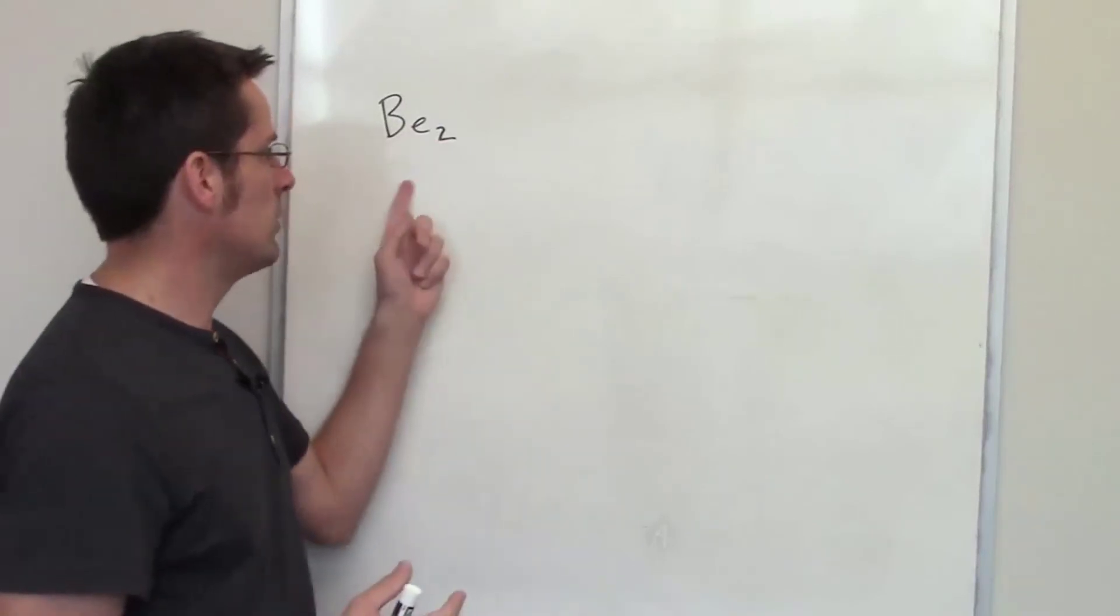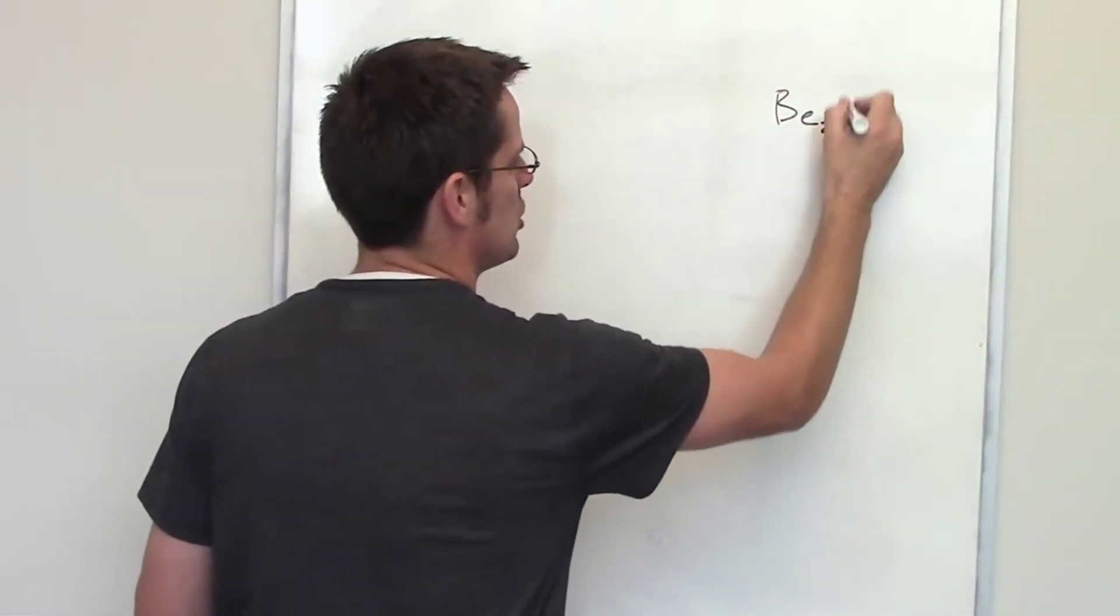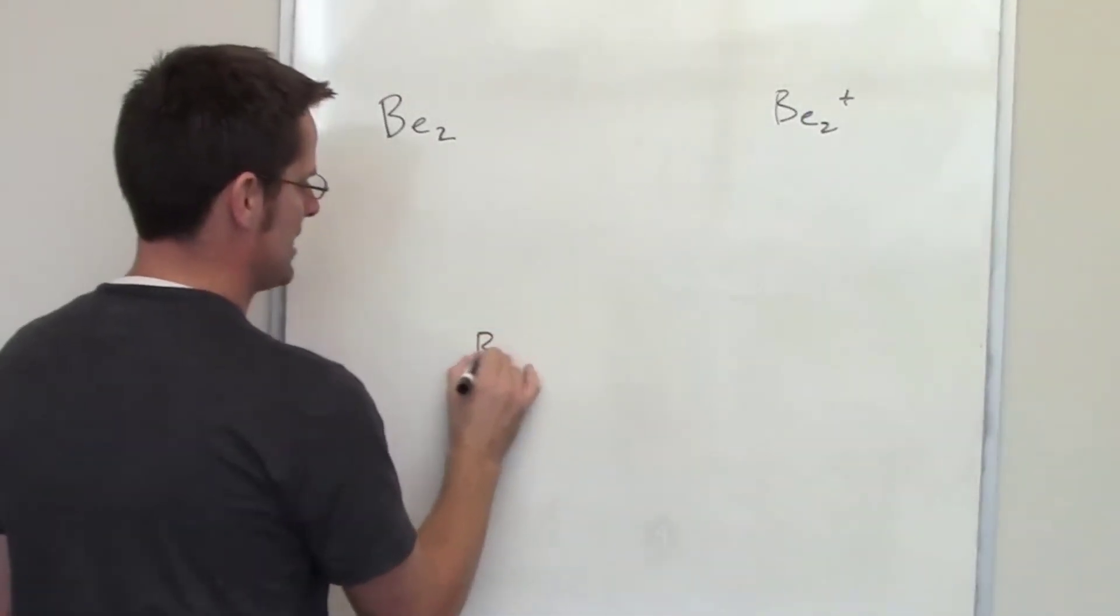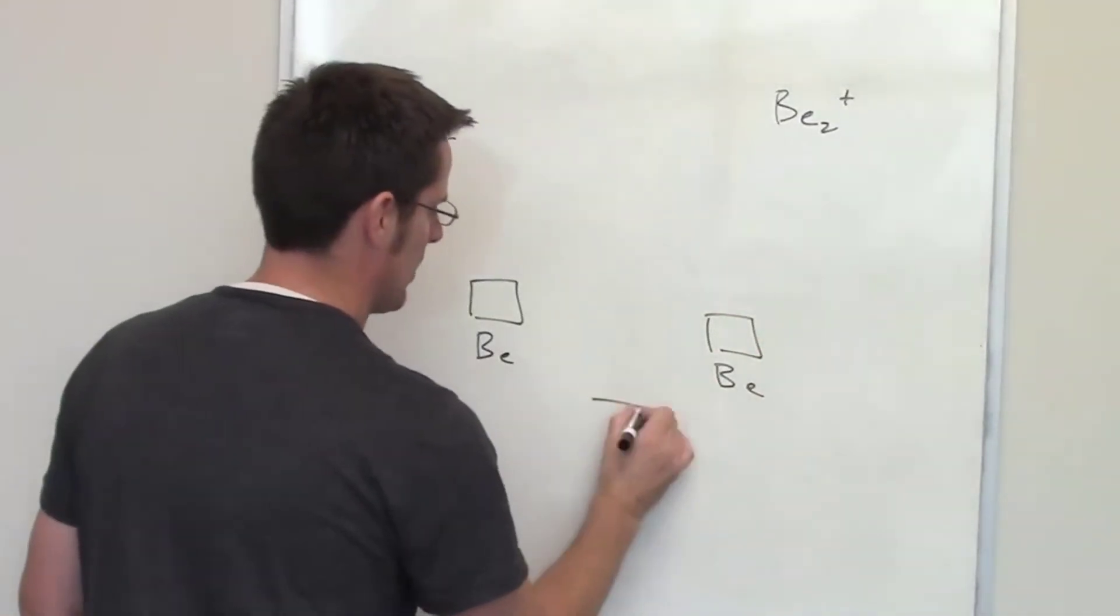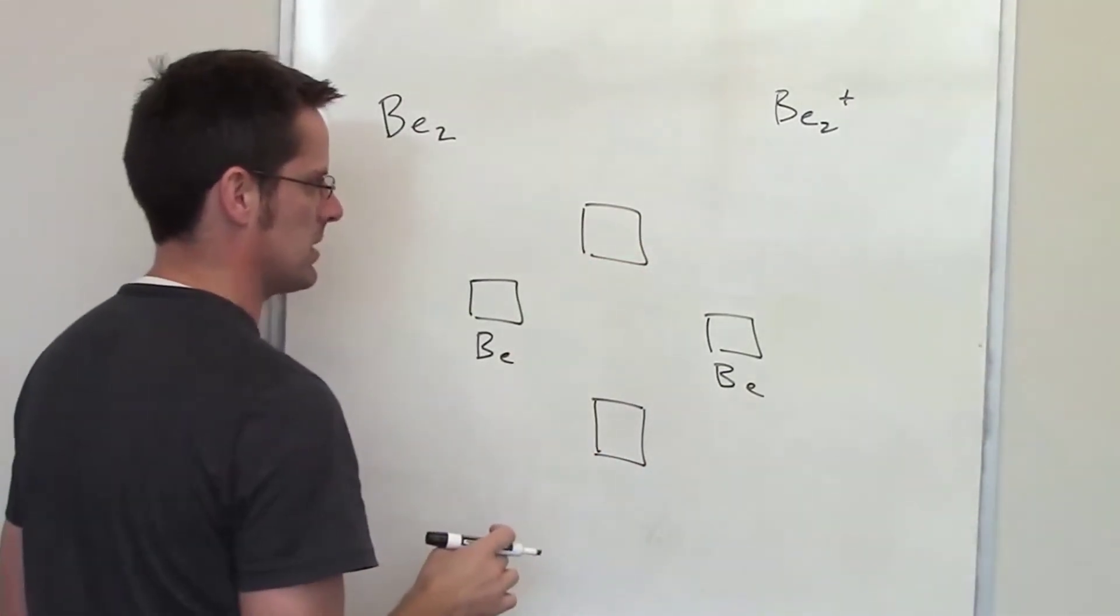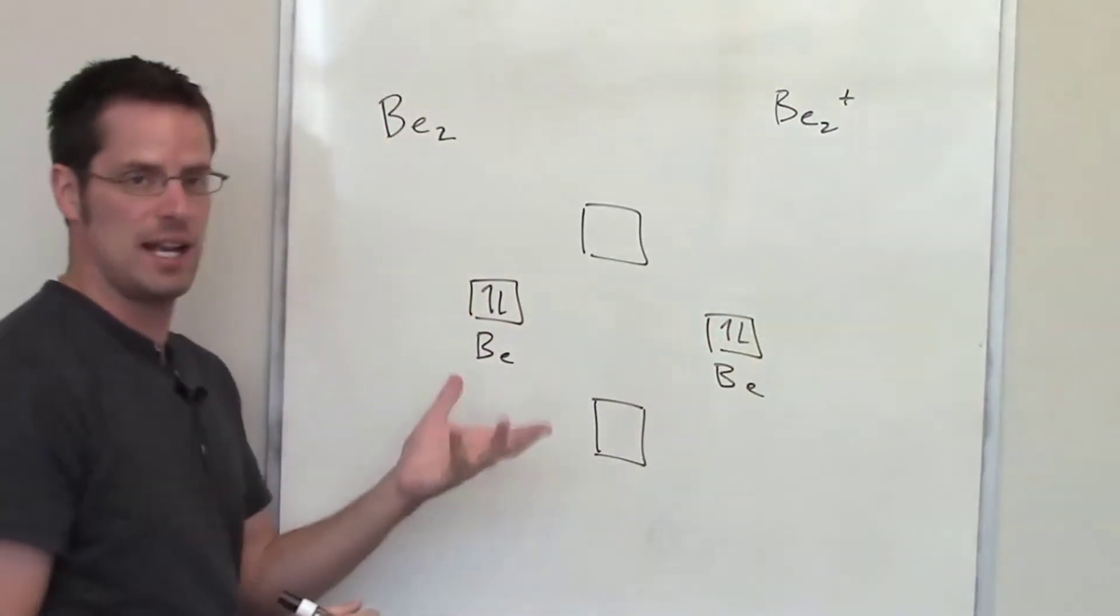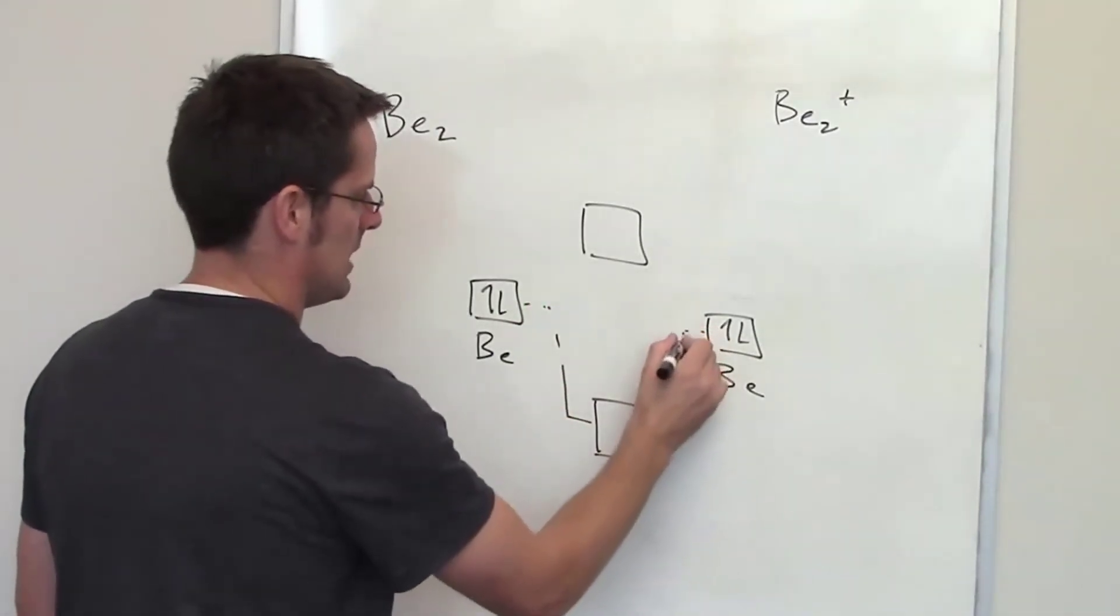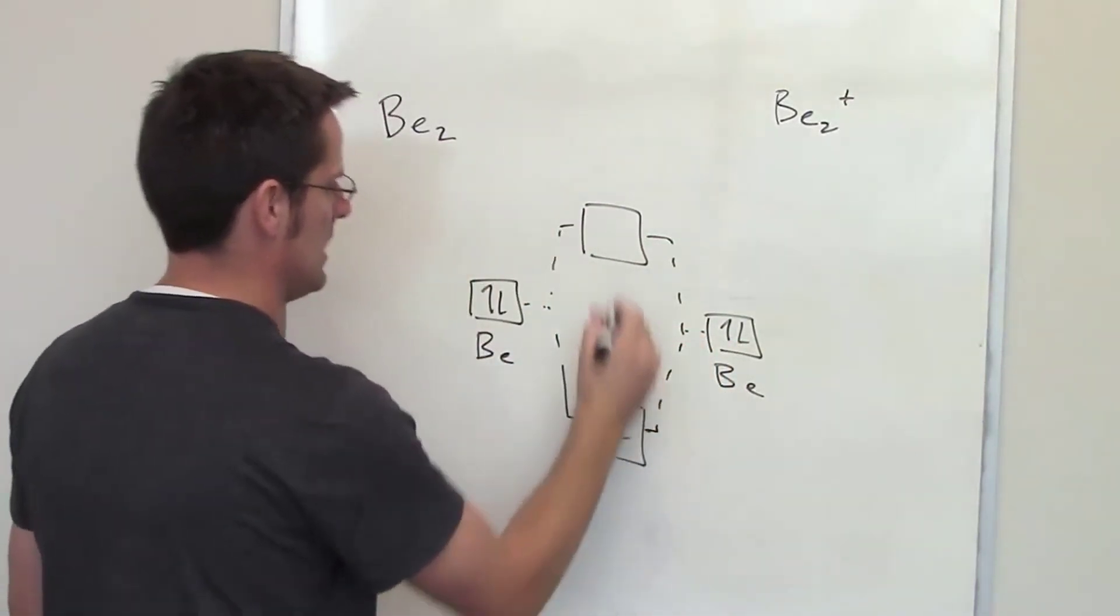This question asks us to consider the molecule BE2 using molecular orbital theory. Would we expect BE2 to exist? Would we expect BE2 plus or beryllium 2 plus to exist? First of all, we have to draw the molecular orbital energy diagram. I'm going to start by drawing two separate atoms of beryllium, each bringing their separate S atomic orbitals to the table. As they come together, they're going to form two molecular orbitals. One is a bonding orbital at bottom. The other is an antibonding orbital at top. Beryllium has, each beryllium atom has two valence electrons. And you can tell that by looking and seeing that they're in column two of the periodic table. So when they come together to form their bonding and antibonding orbitals, I have to bring these now four electrons and put them into these individual orbitals like that.